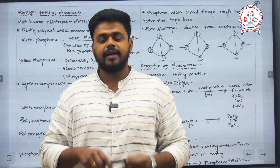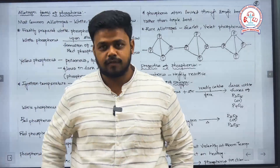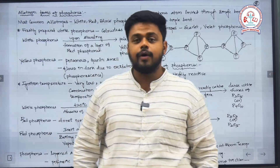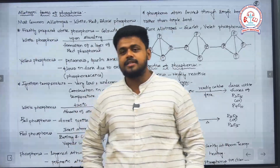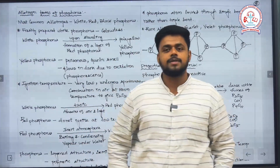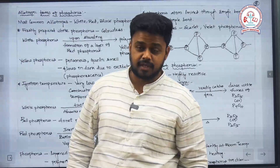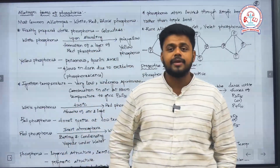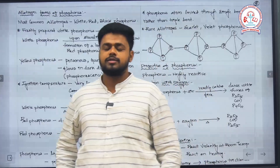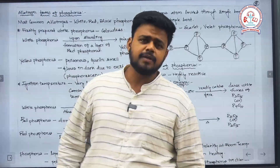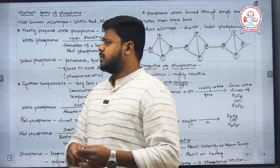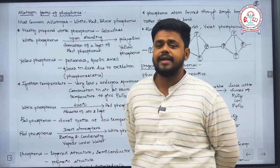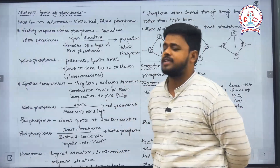Good morning to all. Welcome back to the third session of the P-Block Elements 2. In this session, we are going to completely look into phosphorus — its allotropes, compounds, physical properties, and chemical properties. The most common allotropes of phosphorus are white, red, and black phosphorus.